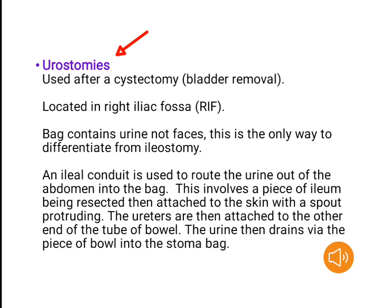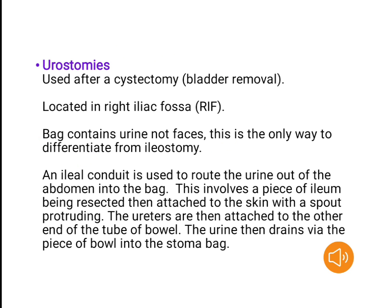Urostomy. Used after a cystectomy — bladder removal. Located in the right iliac fossa. The bag contains urine, not feces; this is the only way to differentiate from an ileostomy. An ileal conduit is used to route the urine out of the abdomen into the bag. This involves a piece of ileum being resected and then attached to the skin with a spout protruding. The ureters are then attached to the other end of the tube of bowel, and the urine drains via the piece of bowel into the stoma bag.